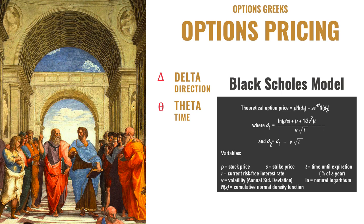The time decay — the amount of time until expiration and the rate of time decay — is known as the variable of theta. T for theta, T for time — a little memory hook for you. V is for vega, which is the measure of implied volatility. So if the expectation of volatility goes up, the option premium goes up. If the expectation of volatility goes down, the option premium goes down.